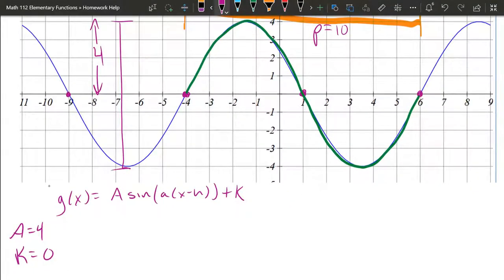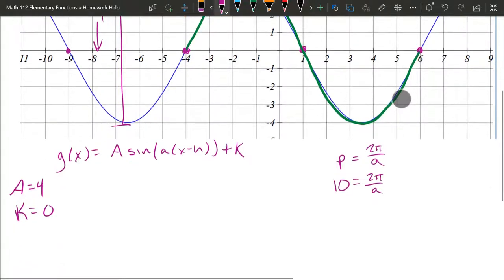So we need to relate a to the period and a equals two pi. Actually we're going to write it as p equals two pi over a. Our period is ten. And we need to solve for a. So we multiply both sides by a. Ten a equals two pi. Divide both sides by ten.